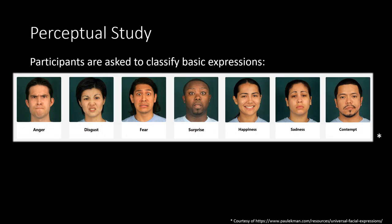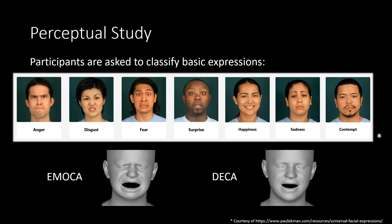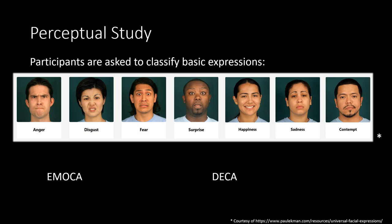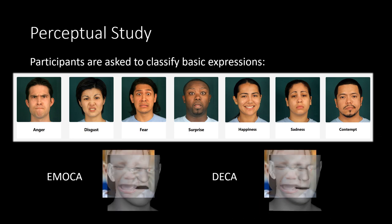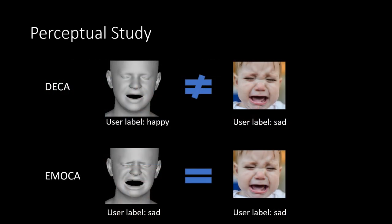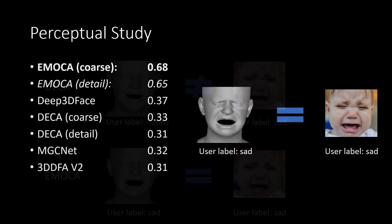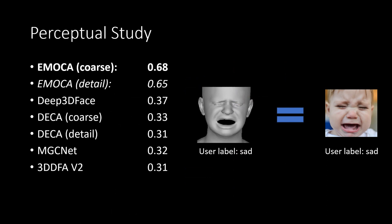We also conducted a perceptual study to quantify the emotional content present in the reconstructed shapes. Participants were asked to estimate the emotion from the reconstructed faces and the corresponding images from which the shapes were estimated. The images were presented to participants in a random order. If the emotional content is perfectly preserved in the rendered 3D faces, the participants would assign them the same emotional content as the original images. We then compute the agreement of emotion classification between the images and their 3D reconstructions. EMOKA outperforms the prior art by a considerable margin.